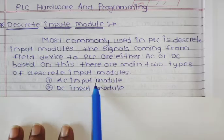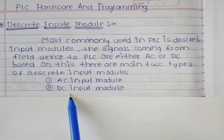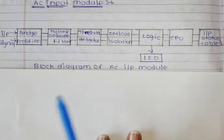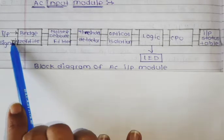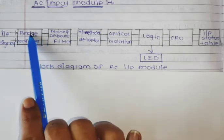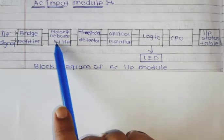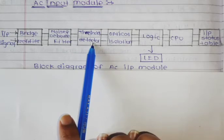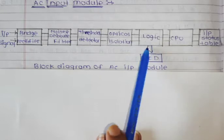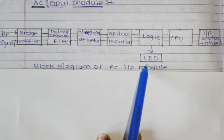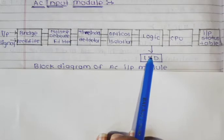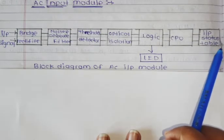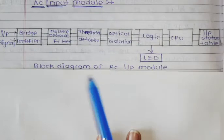Today's lecture covers the AC input module in detail. We see the block diagram of the AC input module. In the block diagram, there is first the input signal, then a bridge rectifier, followed by a noise and debounce filter. After that there is a threshold detector, then an optical isolator and logic section which also has an LED as output. Finally, there is the CPU (central processing unit) and the input status table.